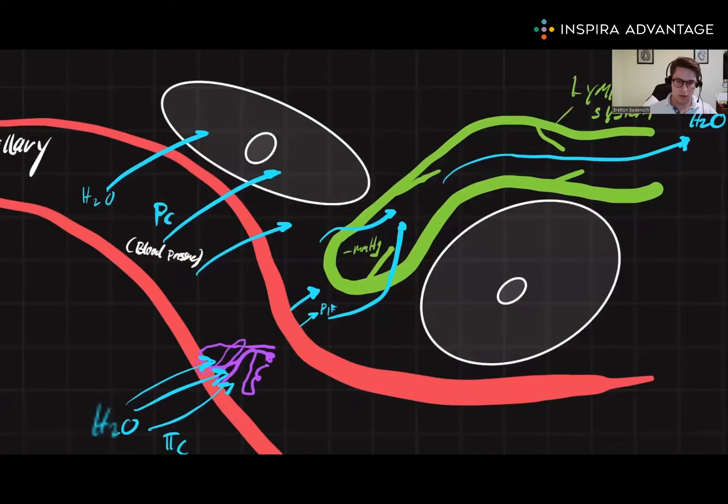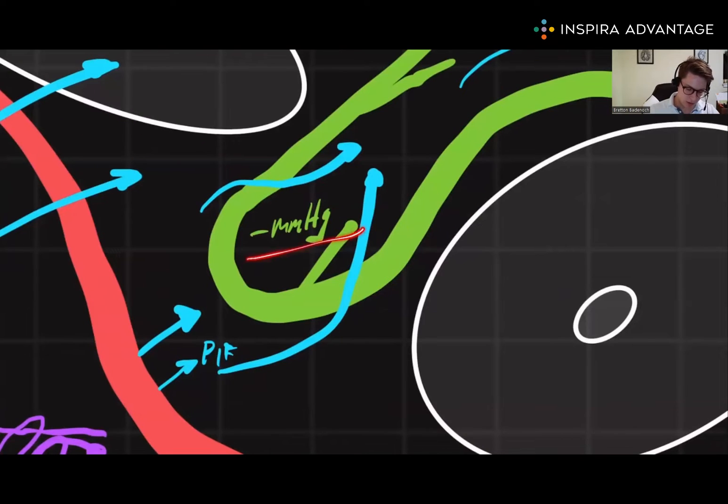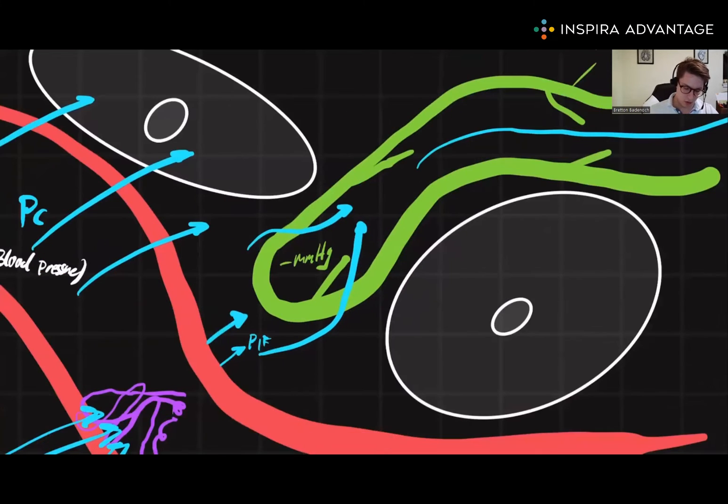Now, we also talked about the interstitial hydrostatic pressure, or PIF, which is right here. And this is a negative pressure, symbolized by the negative millimeters mercury here, caused by the sucking of the lymphatic vacuum shown in green.